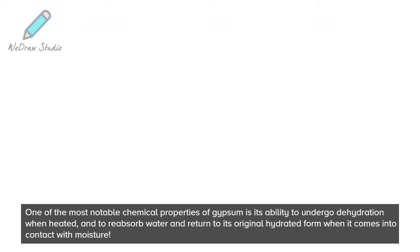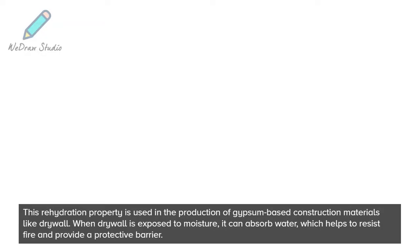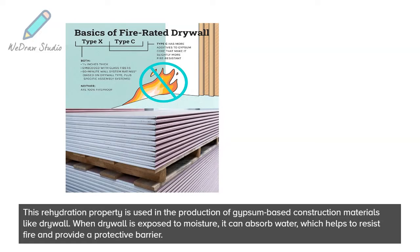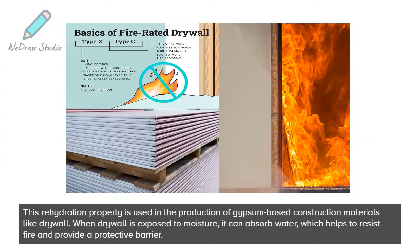One of the most notable chemical properties of gypsum is its ability to undergo dehydration when heated, and to reabsorb water and return to its original hydrated form when it comes into contact with moisture. This rehydration property is used in the production of gypsum-based construction materials like drywall. When drywall is exposed to moisture, it can absorb water, which helps to resist fire and provide a protective barrier.